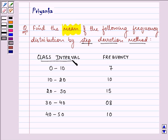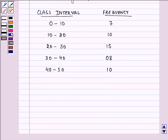Now here we are given the class interval and frequencies as 0 to 10, 10 to 20 and so on, and respective frequencies are 7, 10, 15, 0, 8 and 10. So let us start with our solution.